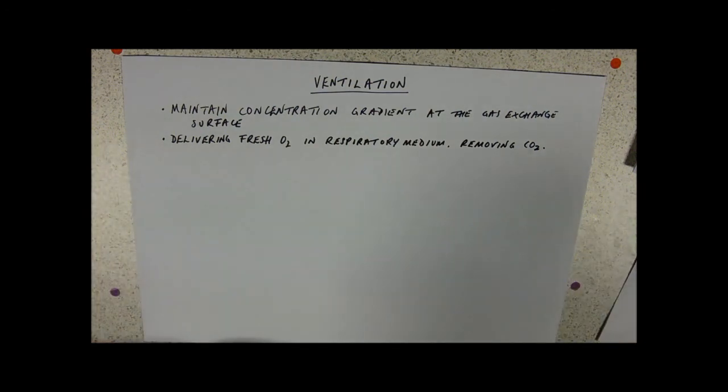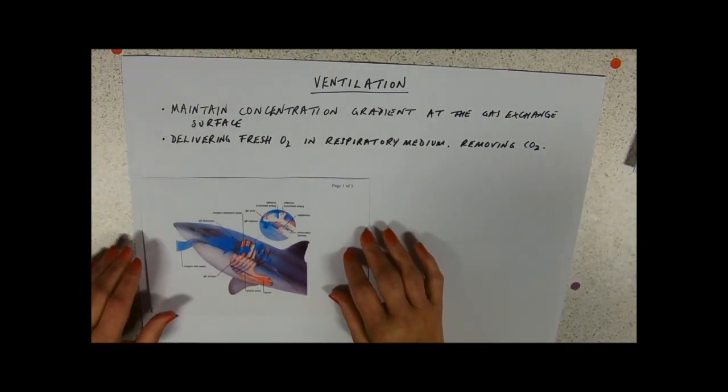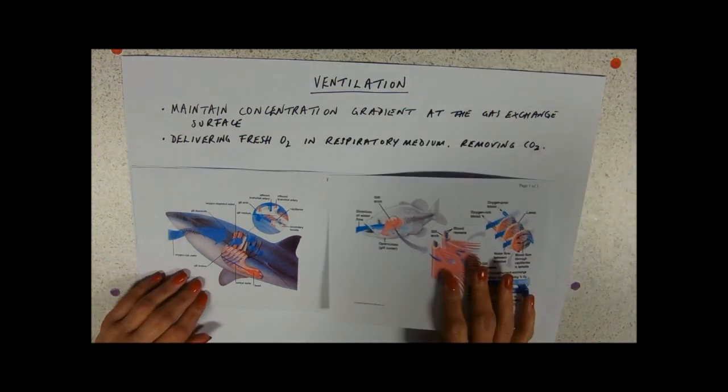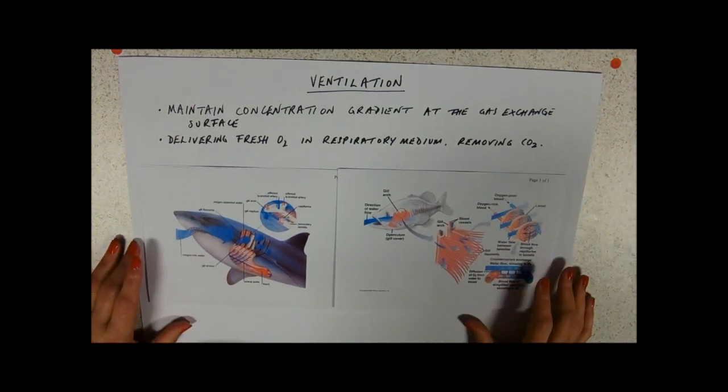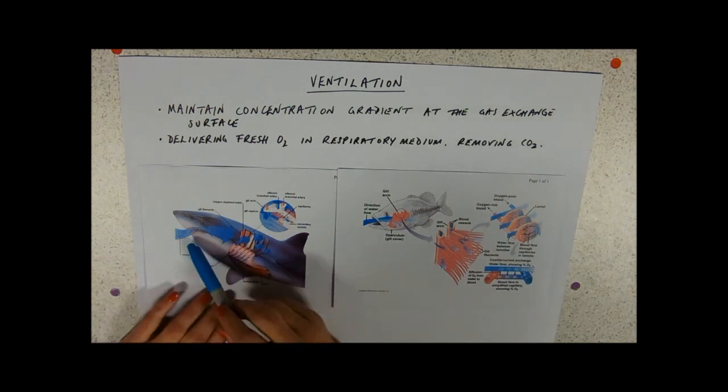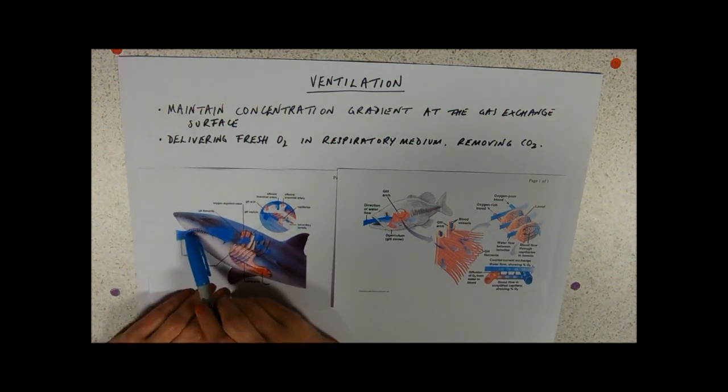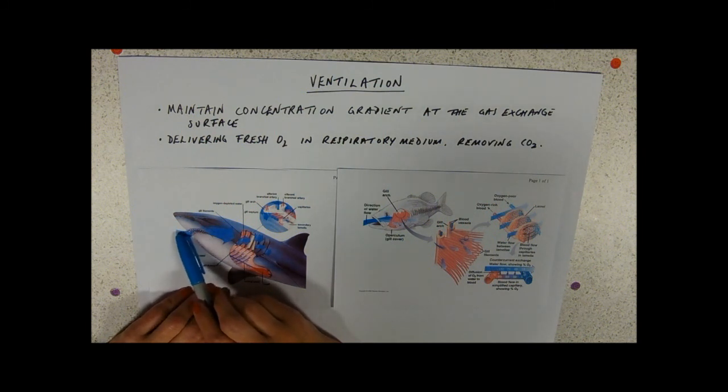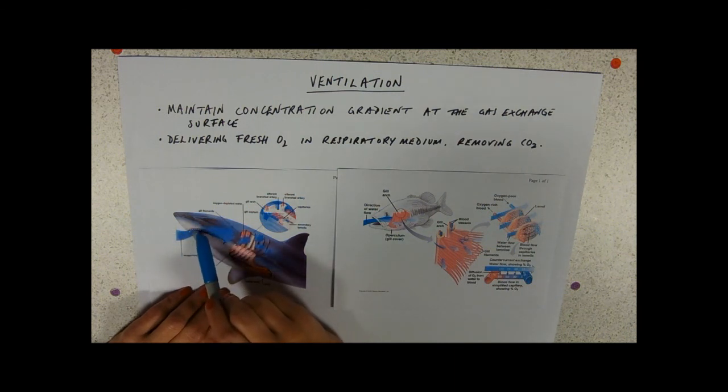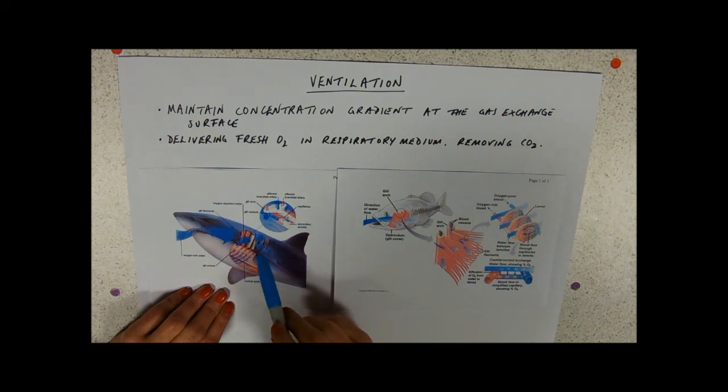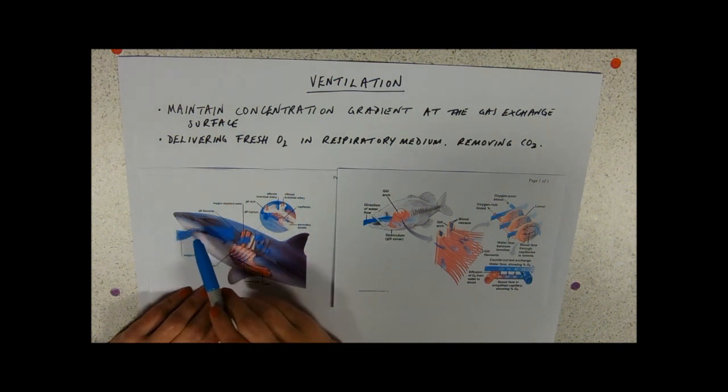Let's look at our pictures again. Here's my shark and here's my fish. You can see that this blue arrow shows the flow of water. The shark is effectively swimming with its mouth open. The water, as the shark is swimming, is moving into its mouth and over its gills and out through these gill slits here down the side.